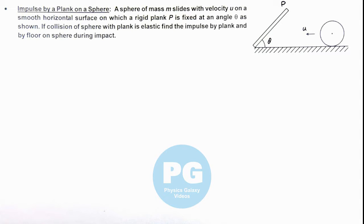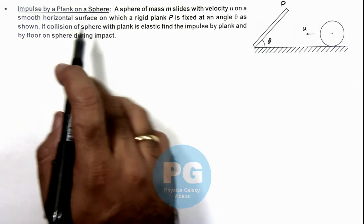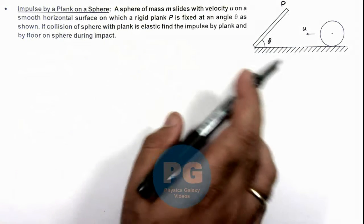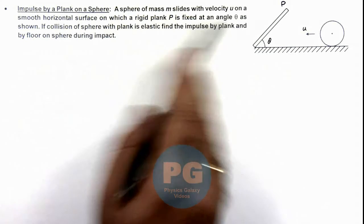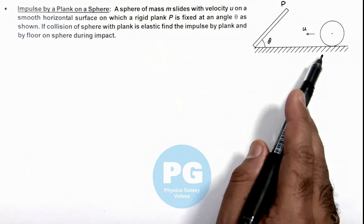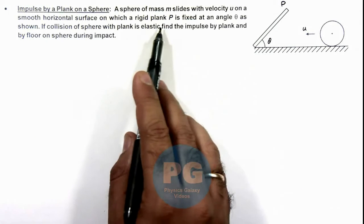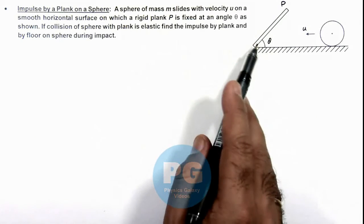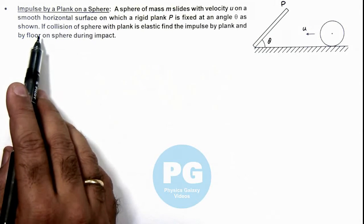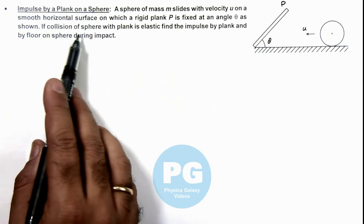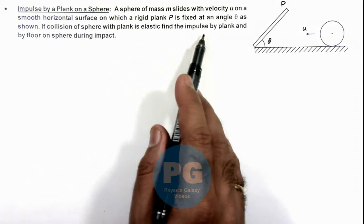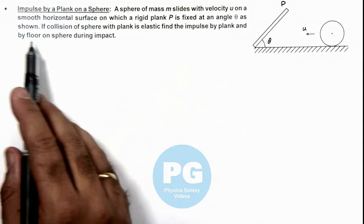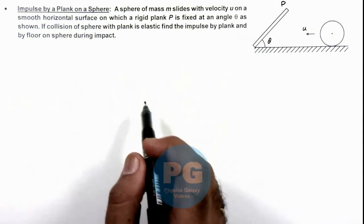In this illustration we'll analyze the impulse by a plank on a sphere. We are given that a sphere of mass m slides with velocity u on a smooth horizontal surface, on which a rigid plank P is fixed at an angle theta. If the collision of the sphere with the plank is elastic, we are required to find the impulse by the plank and by the floor on the sphere during the impact.